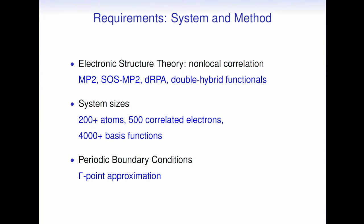Of course, if you go to quantum chemistry there are many methods doing this, but we only want to use the most simple ones — so MP2 or direct RPA, maybe in connection with a double hybrid functional. Still, it's a challenge because we want system sizes that allow sampling for liquids — at least 200 atoms, on the order of 500 correlated atoms. We use a Gaussian or localized basis set, meaning on the order of 4,000 basis functions, because these methods are much more demanding on the basis than GGA functionals. We are using periodic boundary conditions but the gamma point is hopefully enough, so we concentrate on gamma-point-only calculations.